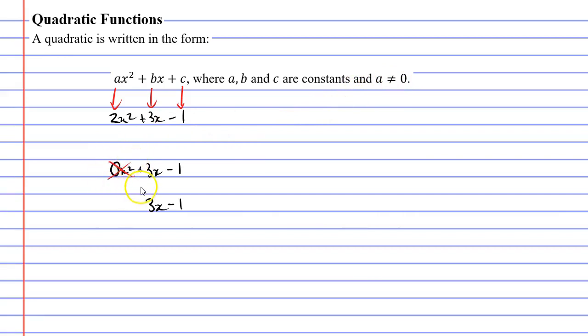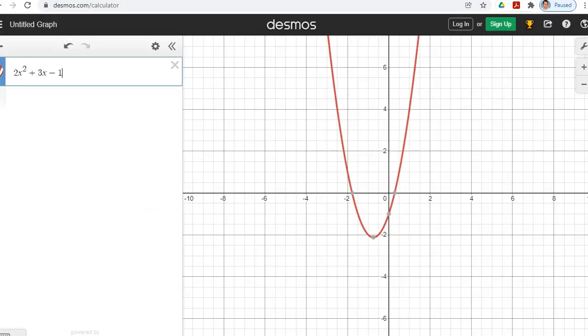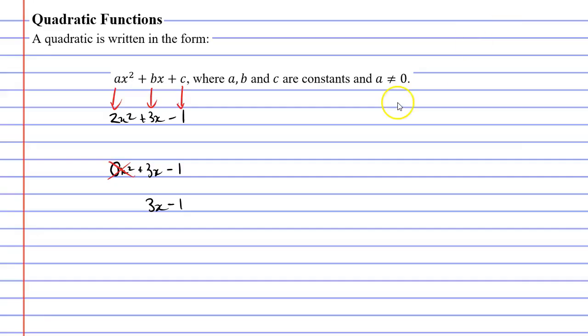Why is that? What happens when you cancel the x squared? Well, if we get rid of 2x squared or just put zero at the beginning, you'll notice it's not a parabola anymore, it's a linear graph. That is because the part of the quadratic where you see the x squared is vital when you want a parabolic shape. Hence why it's extremely important that a does not equal zero, otherwise it's not a quadratic anymore.